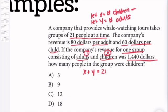To find the total revenue, I'll do 60 times the number of children plus 80 times the number of adults. So 60x + 80y equals the total revenue, which is $1,440.